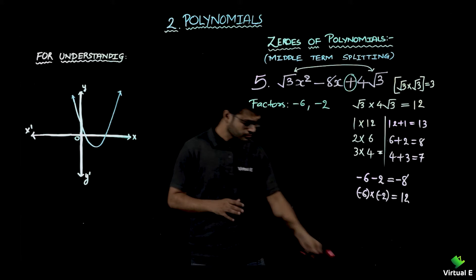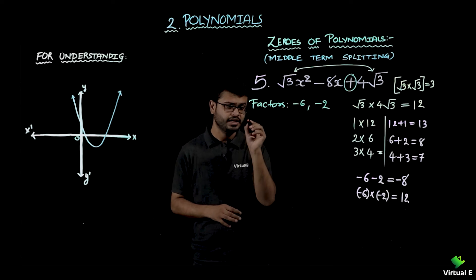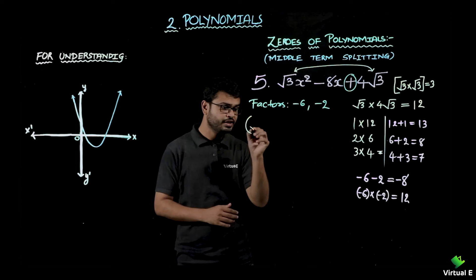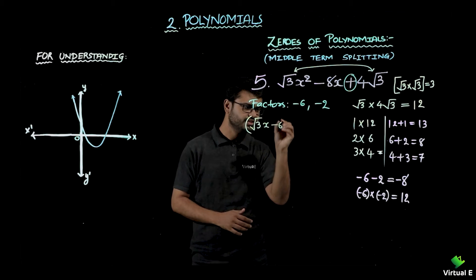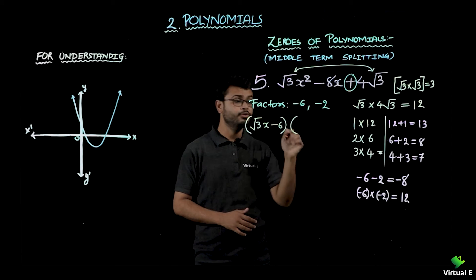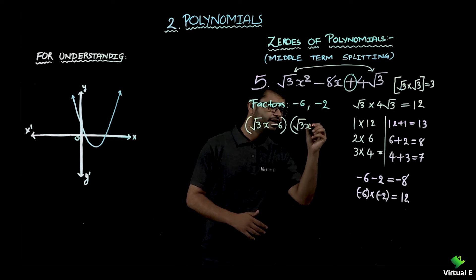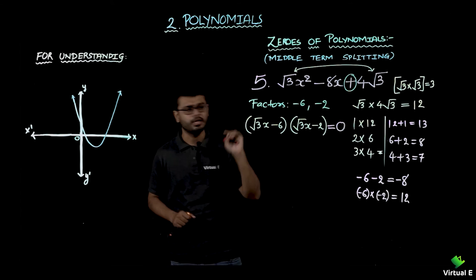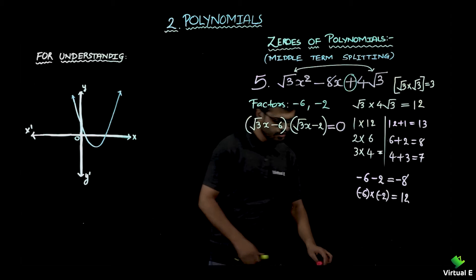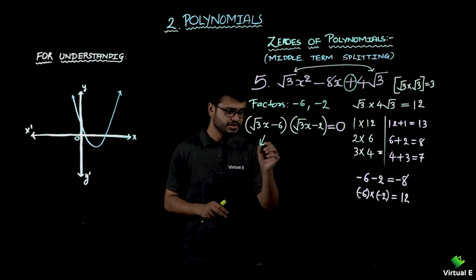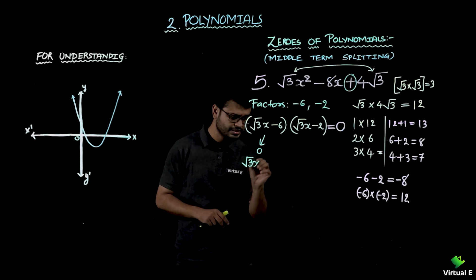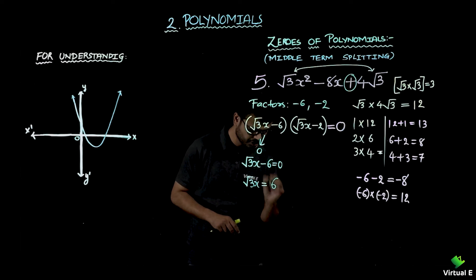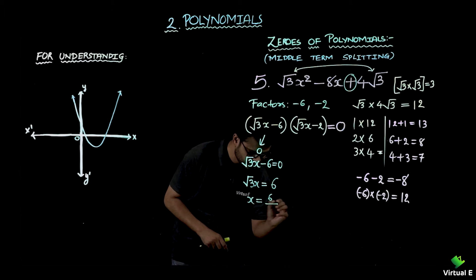Now let's get the factored form. We write: (√3 x − 6)(√3 x − 2) = 0. To find the zeros, equate each factor to zero. First: √3 x − 6 = 0, so √3 x = 6, giving x = 6/√3.